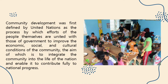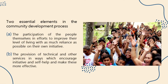Community development was first defined by the United Nations as the process by which efforts of the peoples themselves are united with those of government to improve the economic, social, and cultural conditions of the community, the aim of which is to integrate the community into the life of the nation and to enable it to contribute fully to national progress. A more recent and broader definition is that community development is a process designed to create conditions of economic and social progress for the whole community with its active participation and fullest possible reliance on community initiative. Two essential elements in the community development process are: first, the participation of the people themselves in effort to improve their level of living with as much reliance as possible on their own initiative.